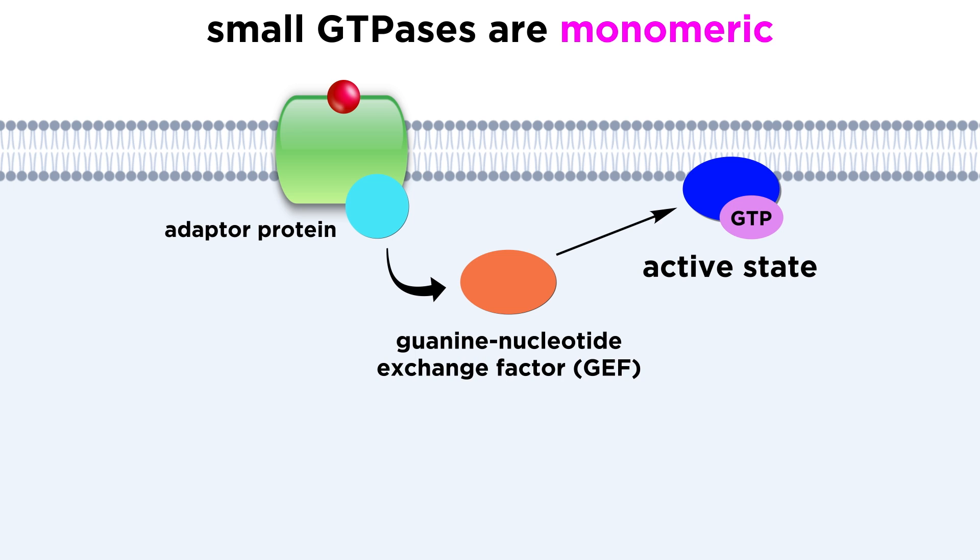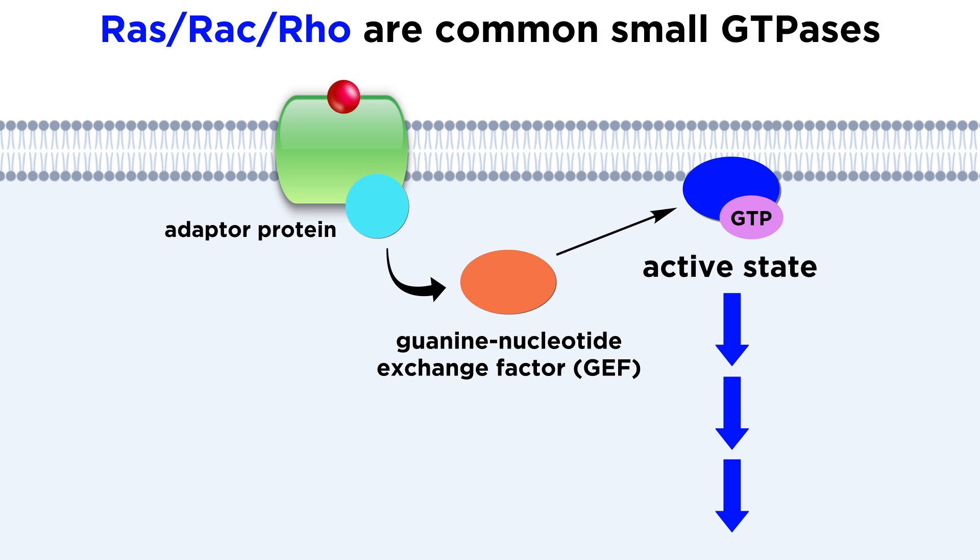RAS, RAC, and Rho are all common small GTPases that can have widespread cell signaling effects.